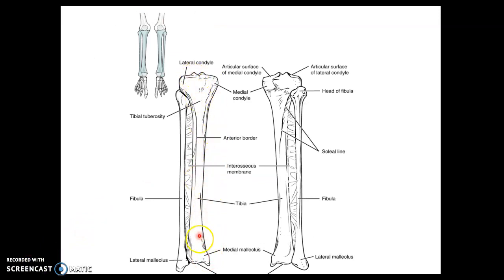Here we can see the more massive tibia with a lot of good landmarks like the lateral and medial condyles and the tibial tuberosity, where your patellar tendon inserts into. At the distal end near your ankle, we have a medial malleolus.